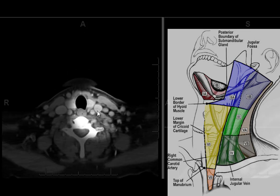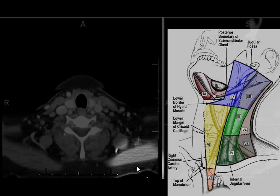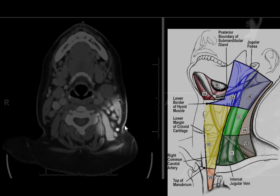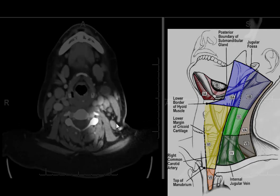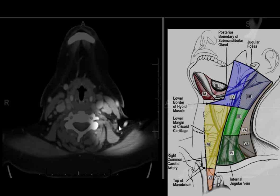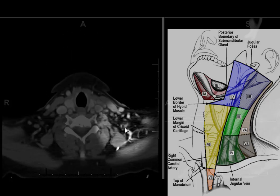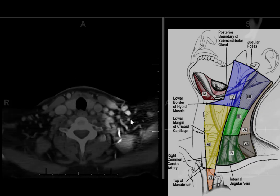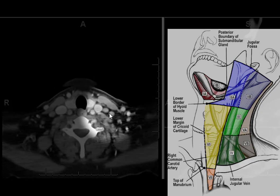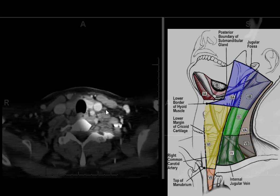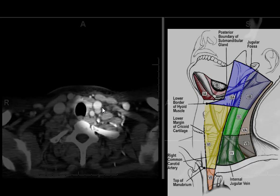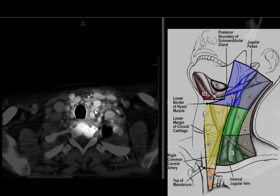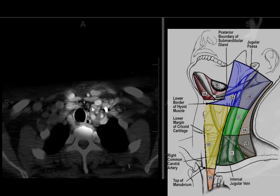Pretty sizable on this side. Level 5 lymph nodes in the posterior triangle are behind the sternocleidomastoid muscle and in front of the trapezius muscle — these are level 5a lymph nodes. We get down to level 5b when we're below the cricoid cartilage, so these few lymph nodes down here are in level 5b. Level 6 is in the anterior portion of the neck. This lymph node is kind of on the border between level 4 and level 6, but probably would be considered level 4.